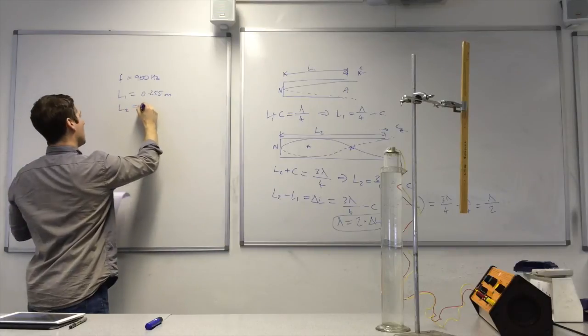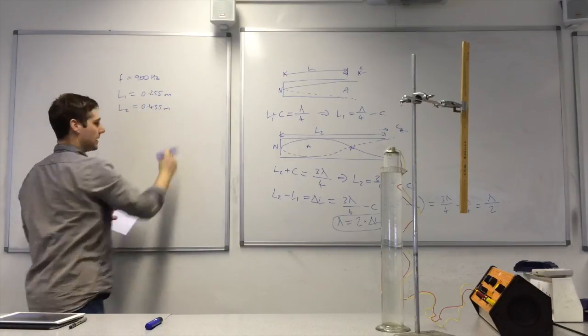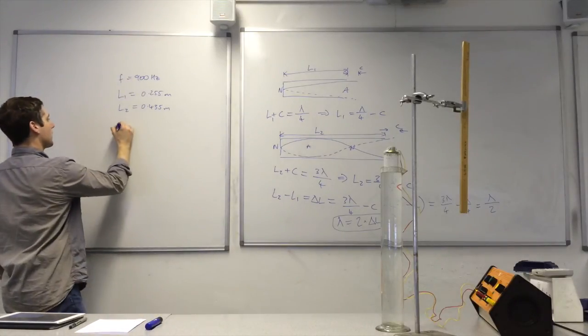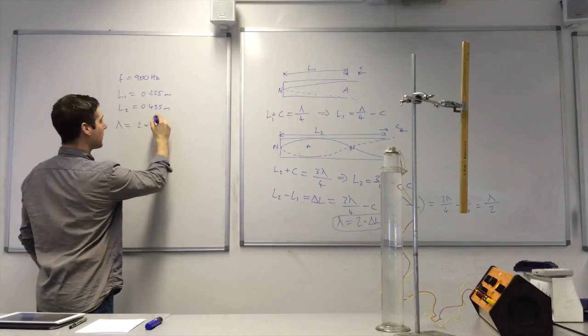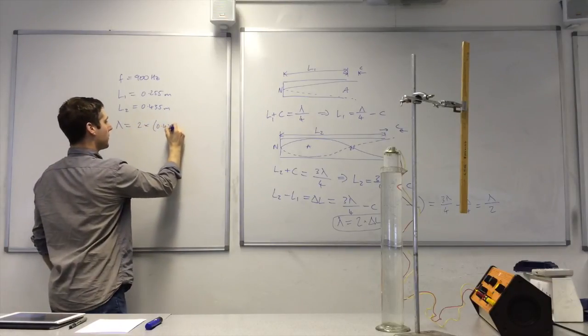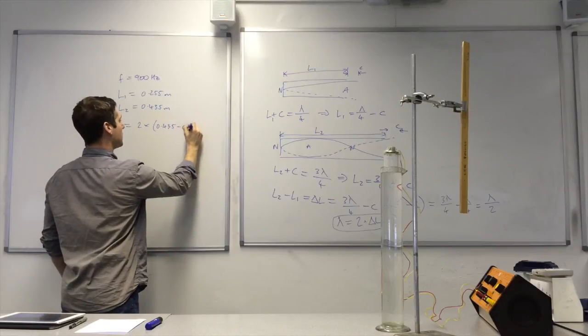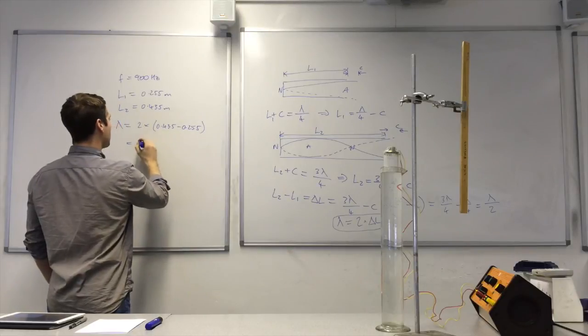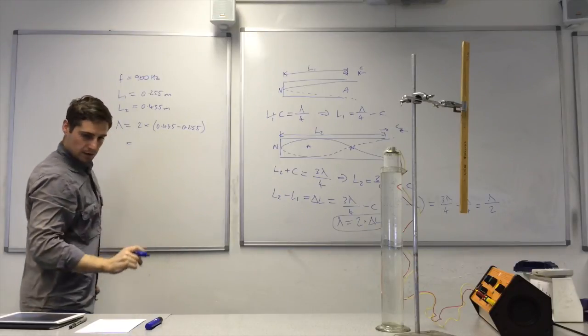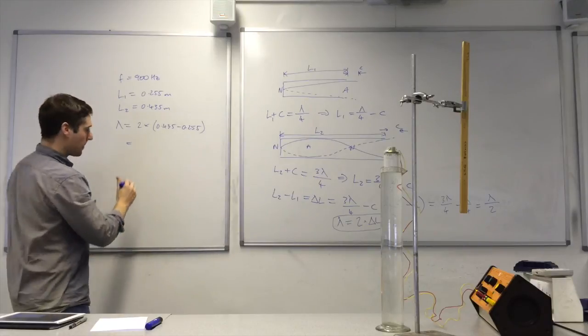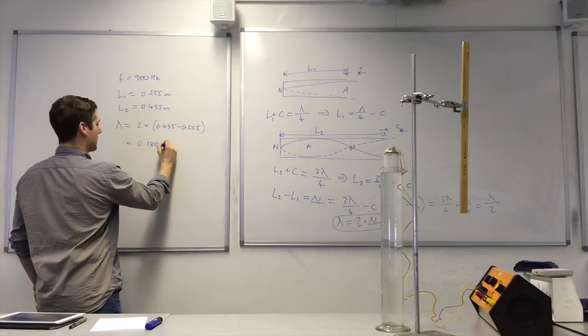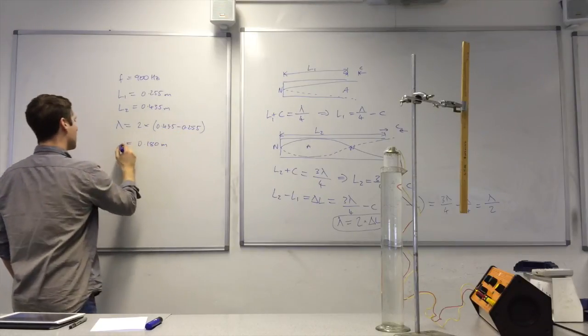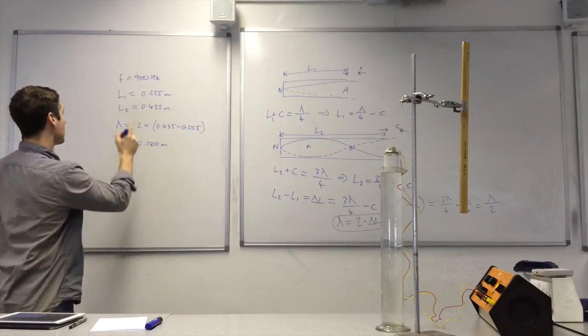L2, 0.435 meters. Okay, so now I can work out my wavelength, and that is 2 times 0.435 minus 0.255. So it's 0.180, I think. Okay, and the frequency is there.